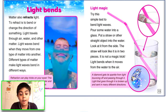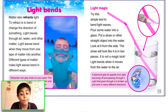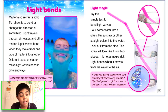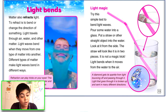Light bends. Matter also refracts light. To refract is to bend or change the direction of something. Light travels through air, water, and other matter. Light waves bend when they move from one type of matter into another. Different types of matter make light waves bend in different ways.